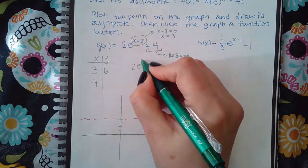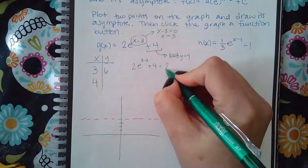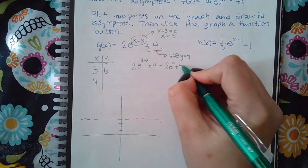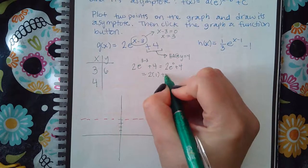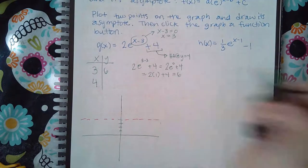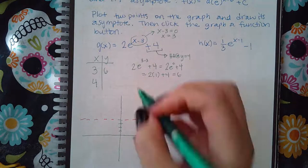So if I plug in three, I get 2e to the zero plus four, which is the same as saying two times one plus four, which is where the six came from. Two times one is two, plus four is six.